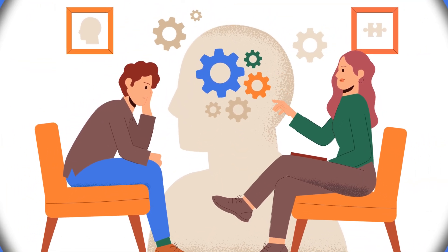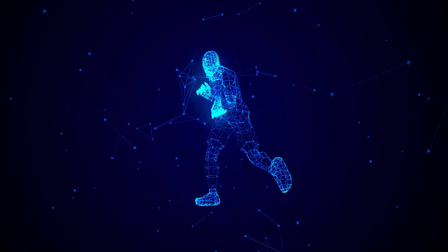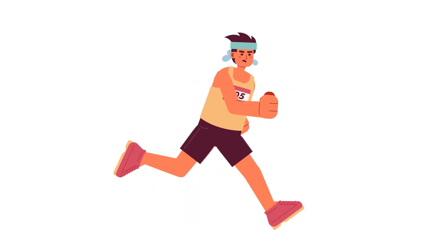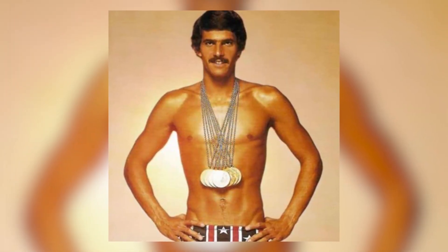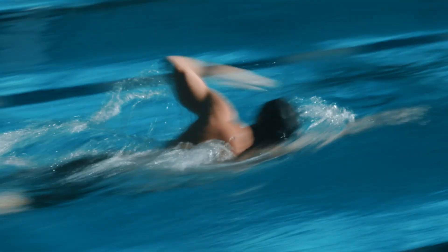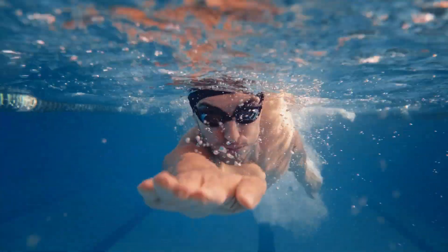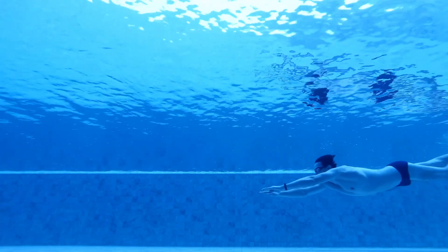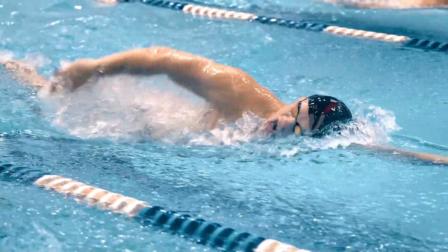One aspect we haven't discussed yet is the human factor — the psychological and emotional elements that can push athletes to exceed their perceived limits. Throughout history, we've seen examples of athletes breaking through seemingly insurmountable barriers: Roger Bannister breaking the four-minute mile, Eliud Kipchoge running a marathon in under two hours. In swimming, when Mark Spitz won seven gold medals in the 1972 Olympics, many thought this feat couldn't be surpassed — yet in 2008, Michael Phelps won eight. This human drive to push boundaries is a wild card in predicting future swimming speeds.